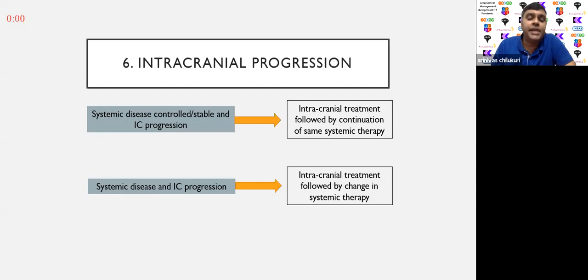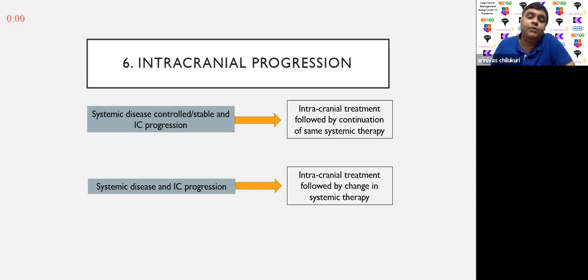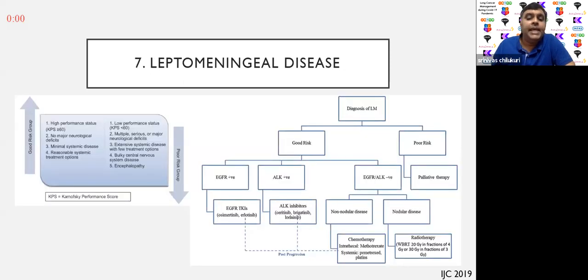In patients with intracranial progression who have systemically controlled or stable disease, we give intracranial treatment — either SRS or hippocampal avoidance — followed by continuation of the same systemic therapy. If the patient has both systemic and intracranial progression, intracranial treatment would be followed by a change in systemic therapy.